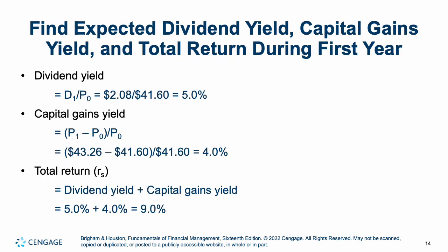If we want to find dividend yield, capital gains yield, and total return: dividend yield is D1 divided by P0 — in this case 5%. Dividend yield changes because stock prices change, so it varies every time you pull up a quote. Capital gains yield is the difference between price one and price zero over price zero, and it equals our growth rate of 4%. Total return is dividend yield plus capital gains yield — in this case, 9%.